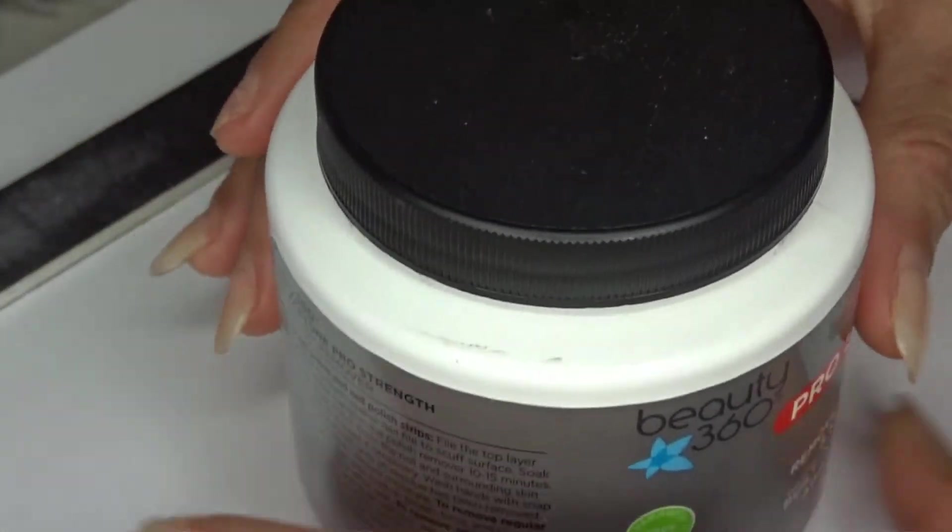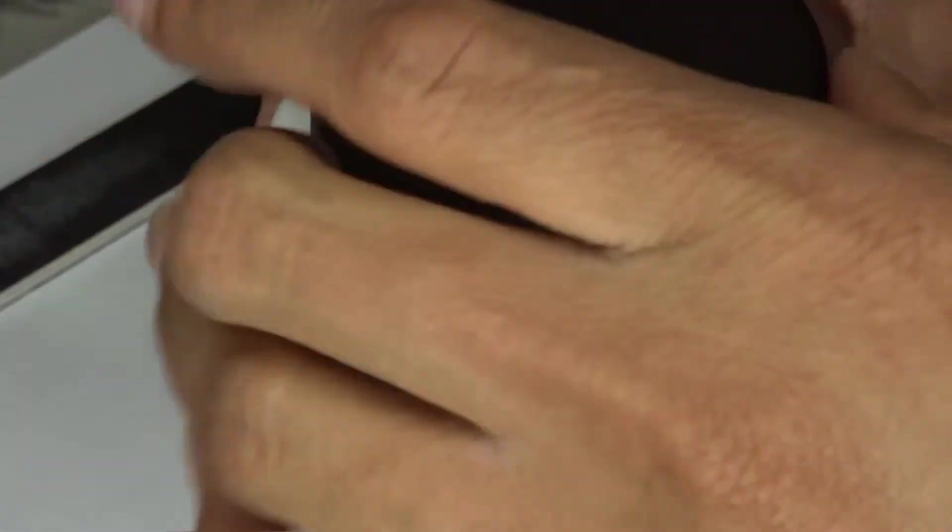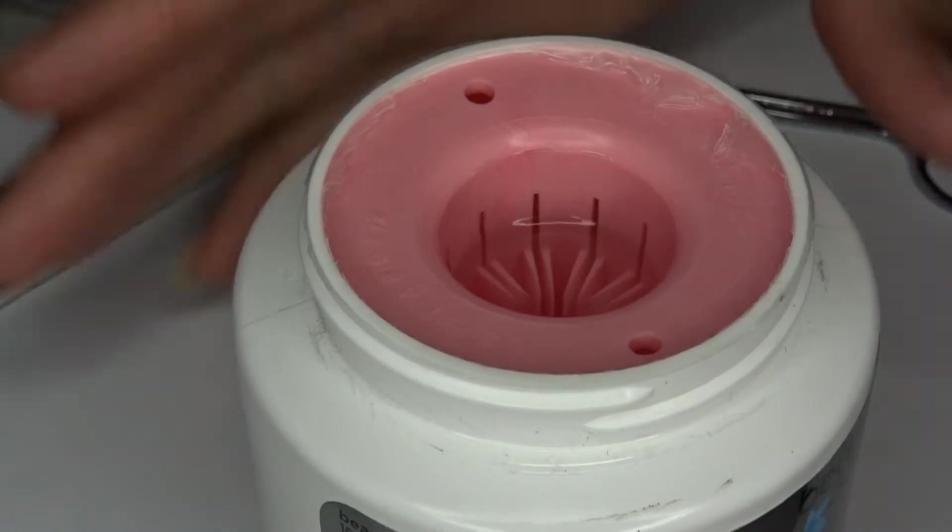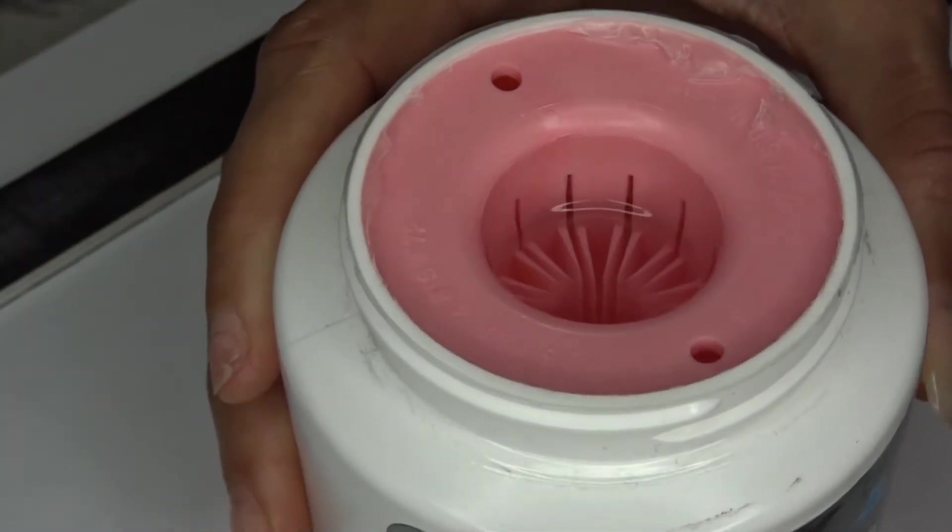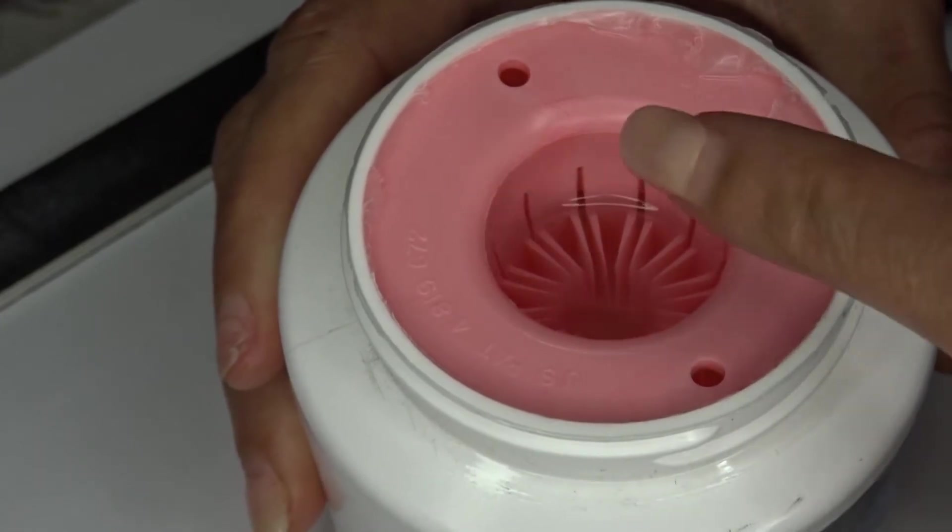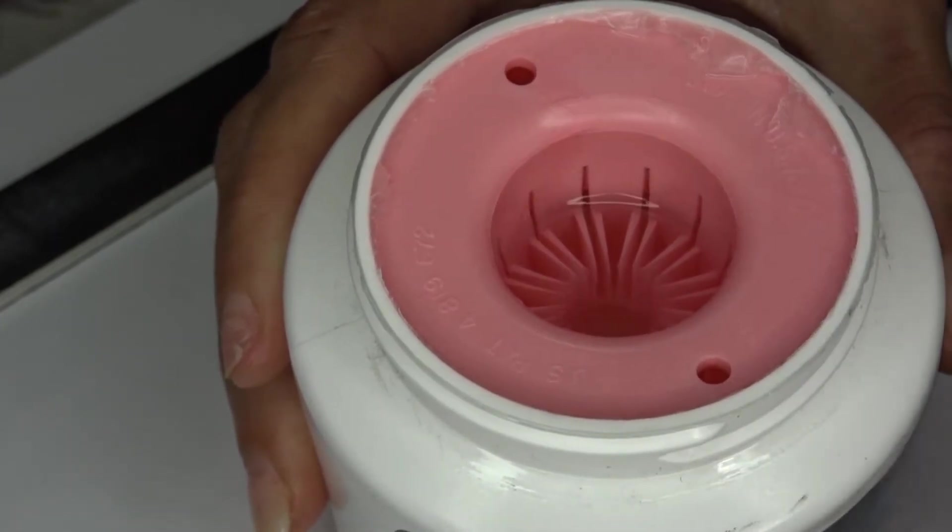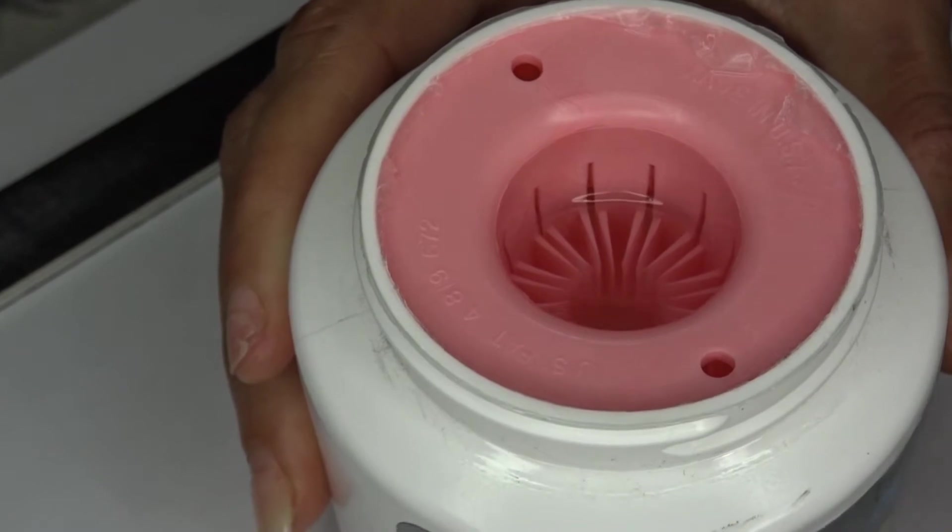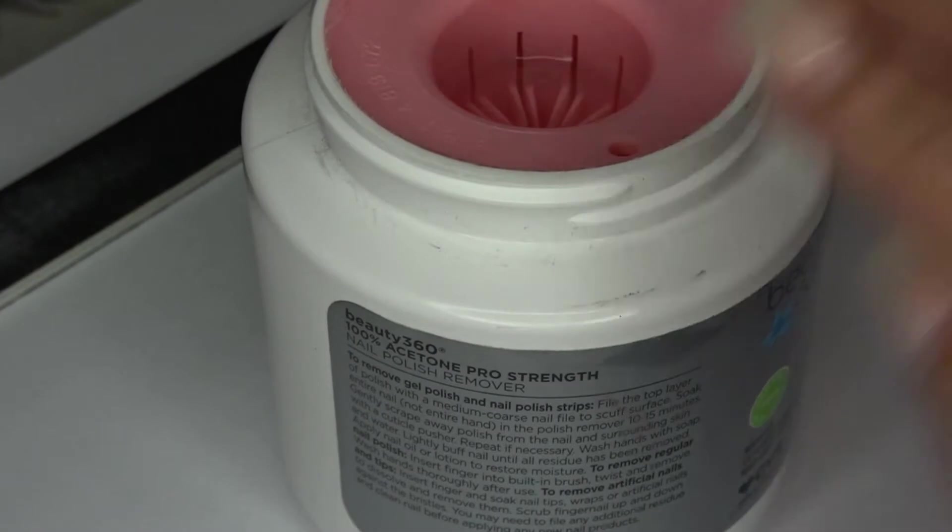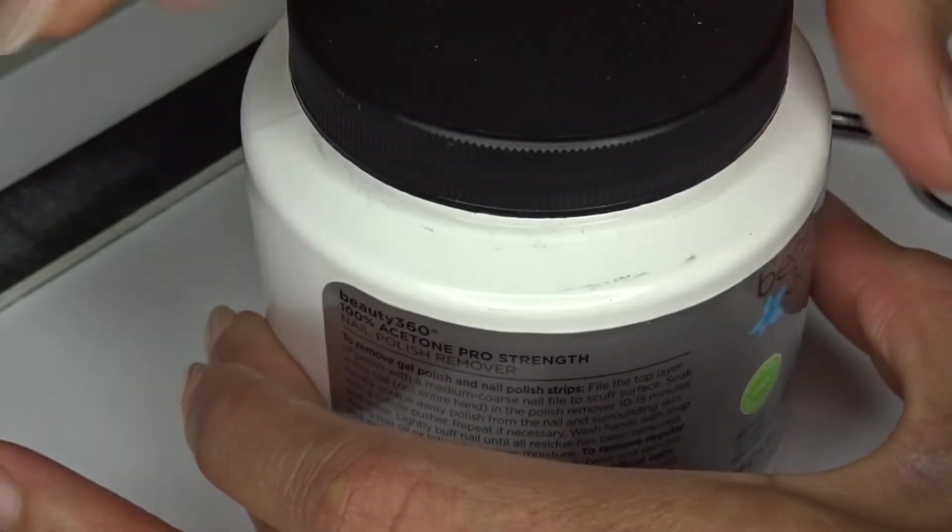Also, this here is a new one. I've never used this type of method before. So I'm going to do that today with you guys. If you see on the inside, there's a brush. There's like those little brush things on the inside. So you're pretty much supposed to put your fingers in it and let it soak. And then it'll start to remove the acrylic from the nail. So I'm going to try that method.